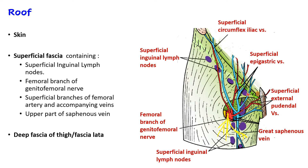After the superficial fascia, we have the deep fascia, also called fascia lata. This is the deepest structure of the roof. To summarize the roof: skin, then superficial fascia containing superficial inguinal lymph nodes, superficial circumflex iliac, superficial epigastric, superficial external pudendal vessels, great saphenous vein, and the femoral branch of the genitofemoral nerve, then the deep fascia.